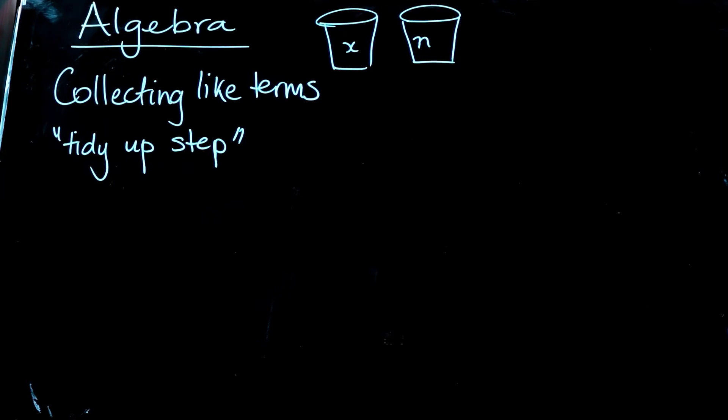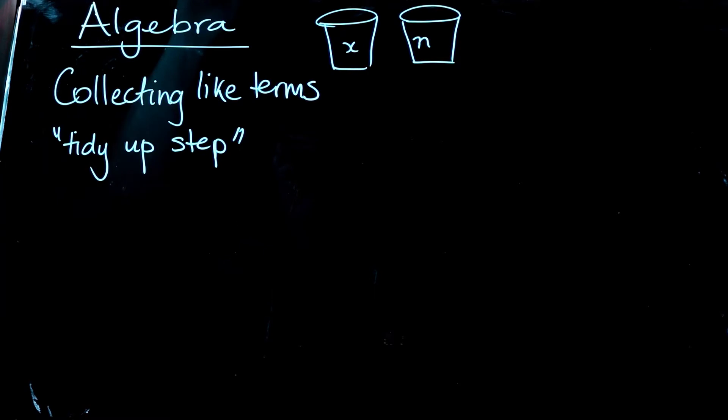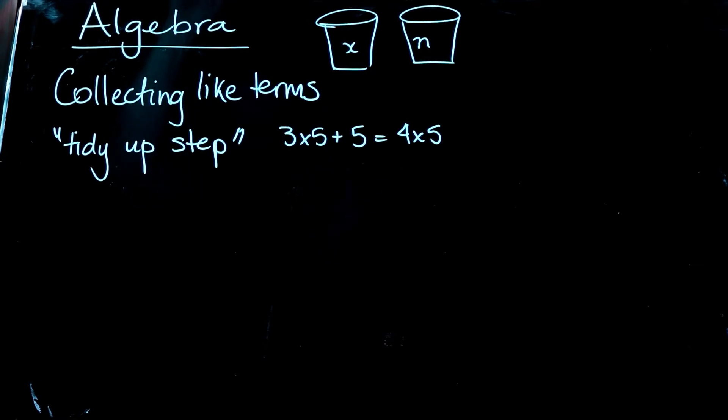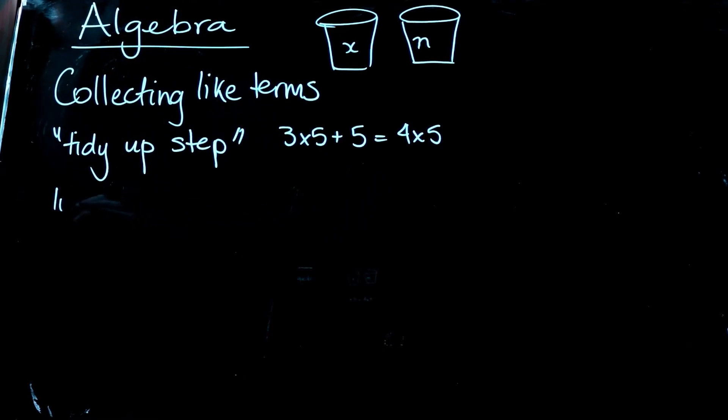And just using numbers, let's think about what that tidying up step looks like. I think in a previous video, I might've used three times five plus five. That seems to be the same to me as if we've got three times five is 15 plus five is 20. Why couldn't I rewrite this as four times five? And that's a kind of thinking that we're using here, but we're focusing in on the letters and we need to look to tidy up.